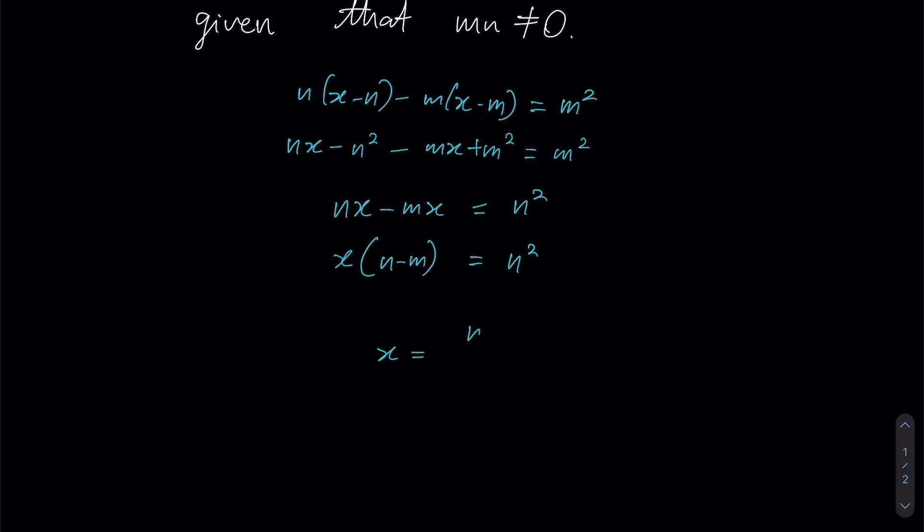At this point, we can divide both sides by n minus m such that we can isolate x. However, for this step it is imperative that we state a certain condition, being this denominator cannot be 0. Otherwise, this equation wouldn't make sense. There wouldn't be a definite solution for x. Hence, you have to specify that n minus m cannot be 0, which means to say that n cannot be equal to m.